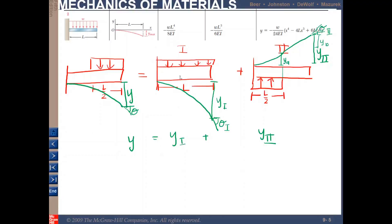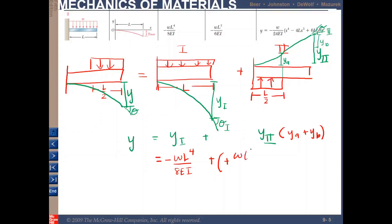The value of y1 is straightforward — we take the formula directly from the table: y1 = −wL⁴ / 8EI. Then y2 consists of ya plus yb. For ya, we substitute L/2 in place of L in the standard formula. Because this deflection is directed upward, ya = +w(L/2)⁴ / 8EI.